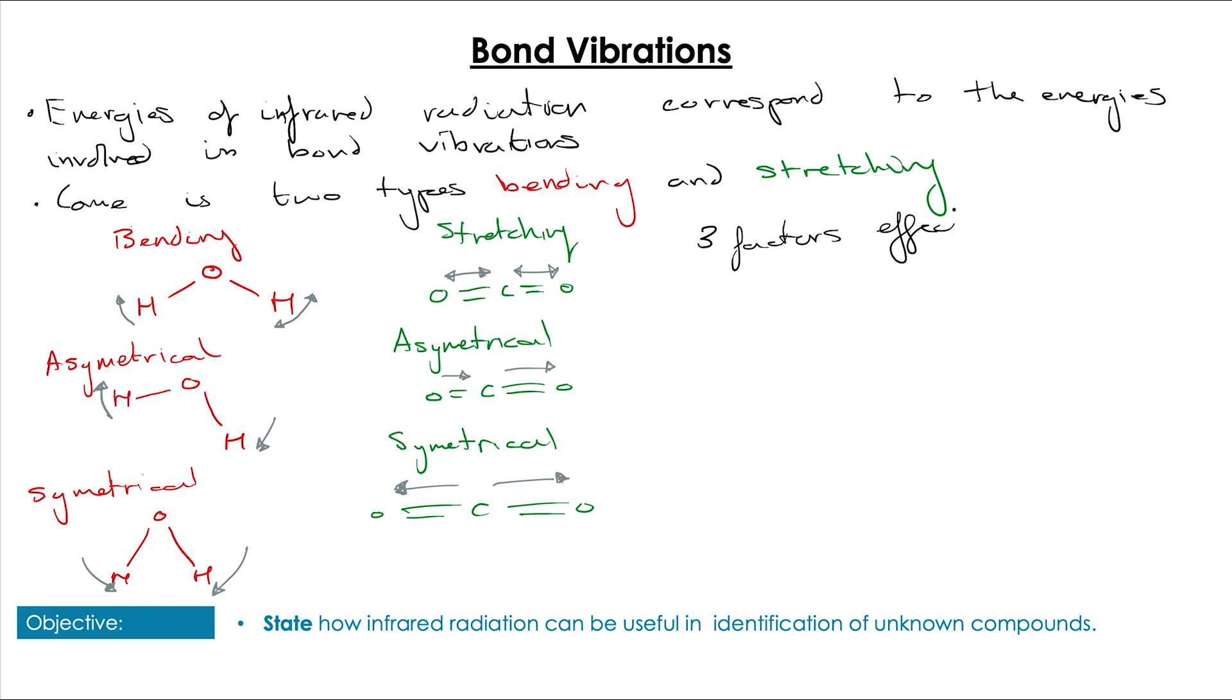There are three factors that affect this. The bond strength, the bond length and the mass of the atoms at the end of the bonds. Just from these three factors alone we know that every single bond is going to have a slightly different signature in an infrared spectrum.